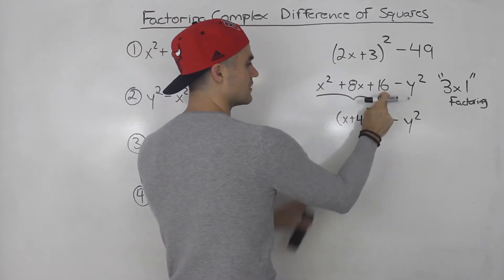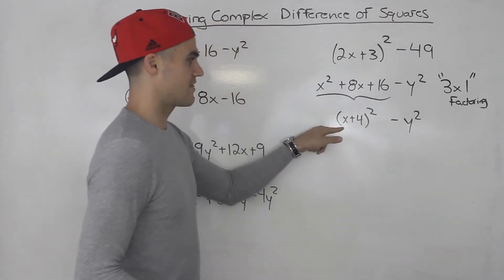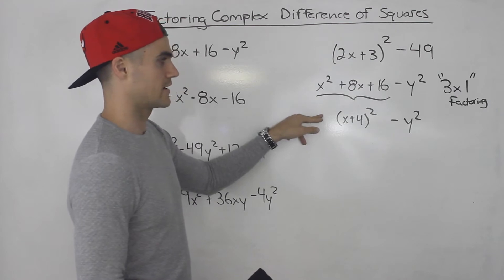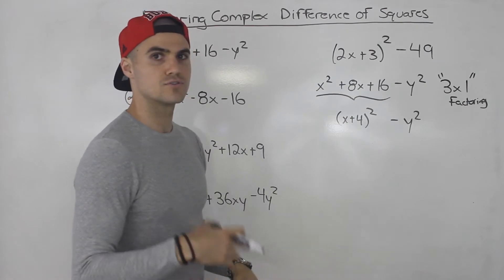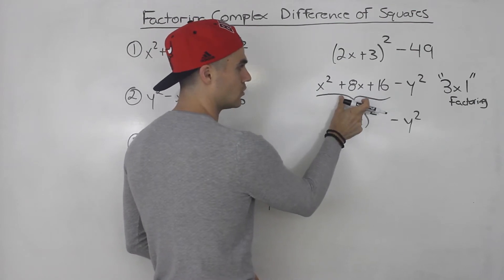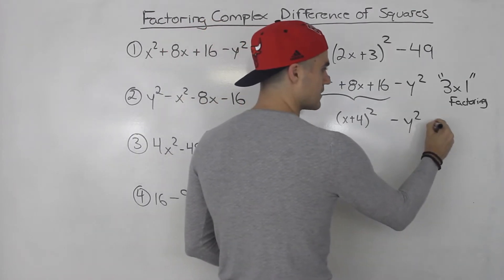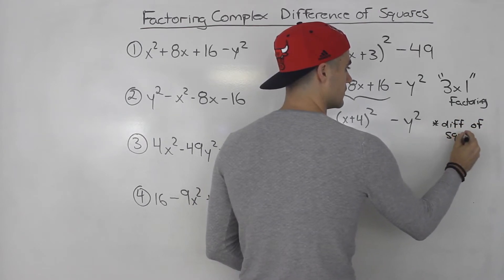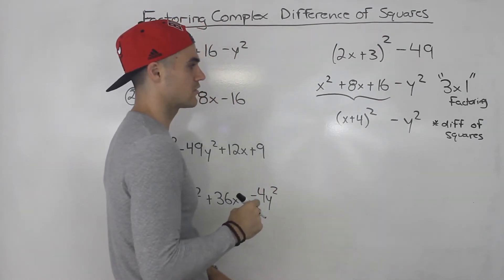We took these three expressions, factored them first, and then this one expression is still remaining. Now notice that this is in the standard format — these two expressions are exactly the same. If we were to expand this, we would get x squared plus 8x plus 16. So it's like we have to do two steps of factoring: first factor the trinomial into x plus 4 squared minus y squared, and then notice that this is a difference of squares.